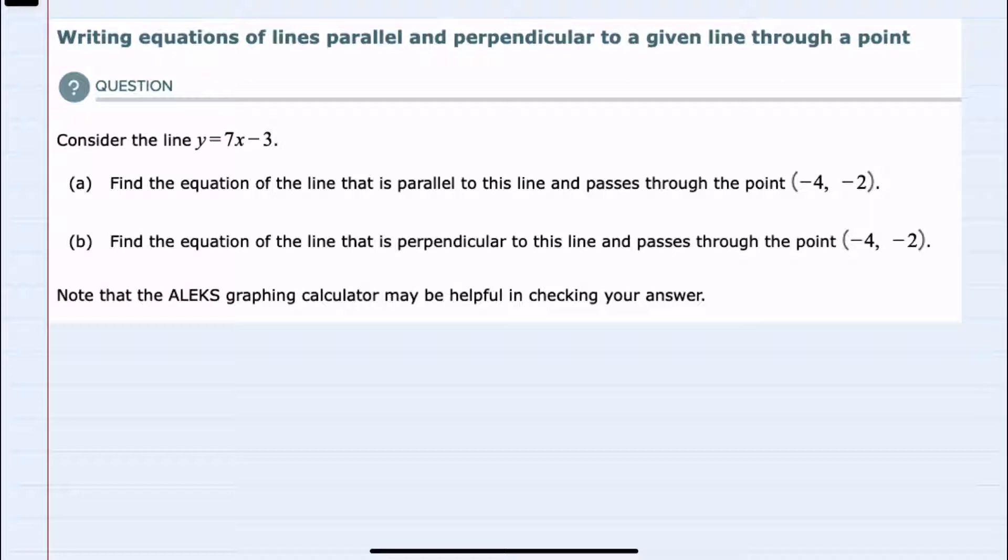We're asked to consider the line y equals 7x minus 3, and in part A to find an equation of a line parallel passing through a given point, and B to find the equation of a line that's perpendicular passing through the same given point.